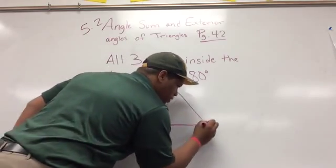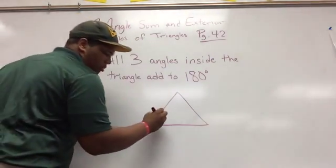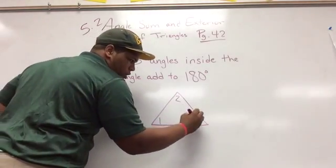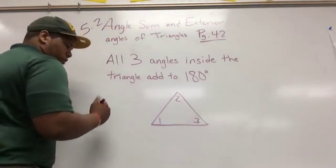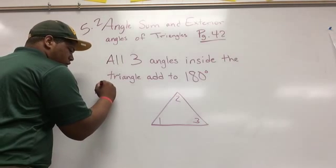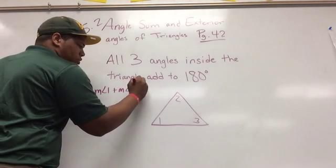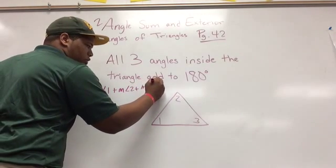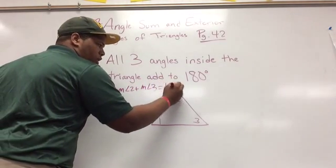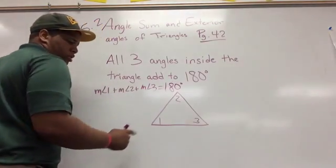So what that means is if I have a triangle and I label mine one, two, and three, the measure of angle one plus the measure of angle two plus the measure of angle three equals 180 degrees.